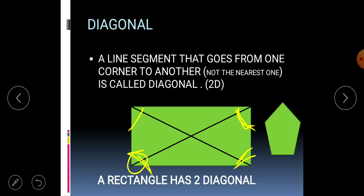Now let's take another example with a shape that has five corners. From one corner, we can draw a diagonal to a non-adjacent corner, and another diagonal to yet another non-adjacent corner. But we cannot draw diagonals to the two nearest points because those are sides, not diagonals.